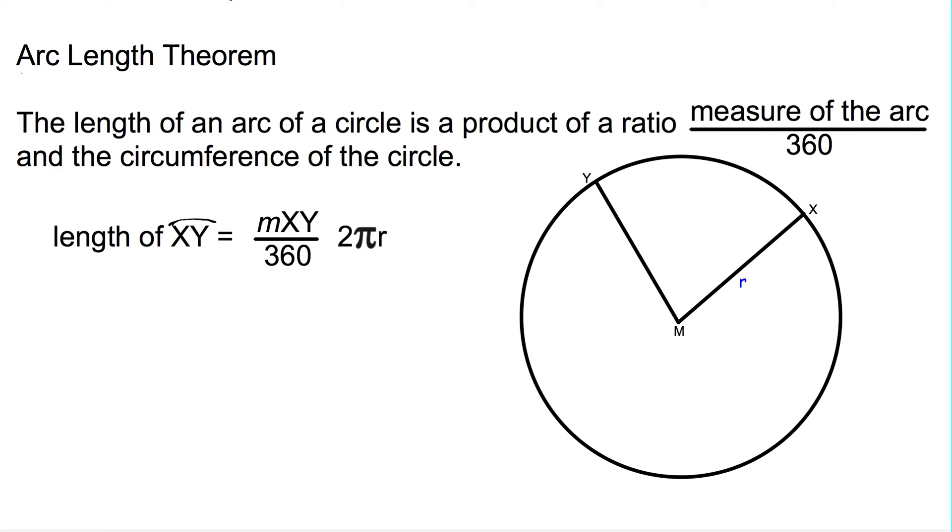Here we have the arc length theorem. You might want to read it to yourself as I read it aloud. The length of an arc of a circle is a product of a ratio, measure of the arc over 360 degrees, and the circumference of the circle.